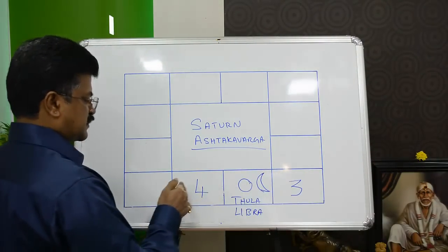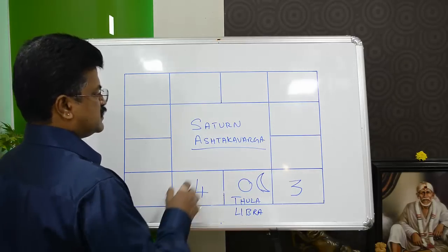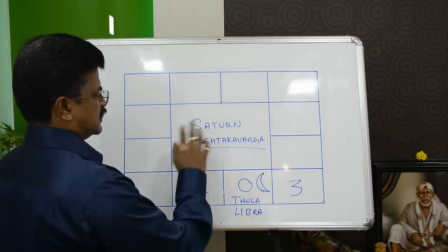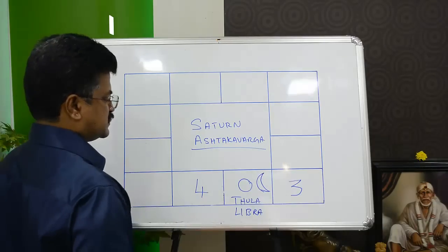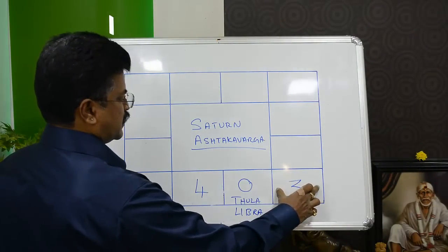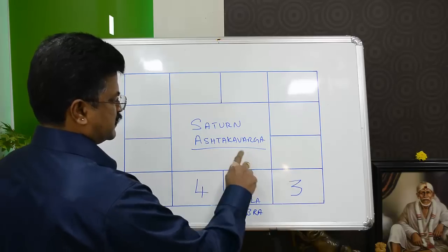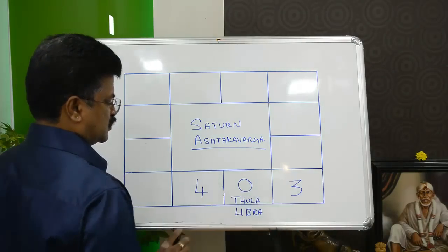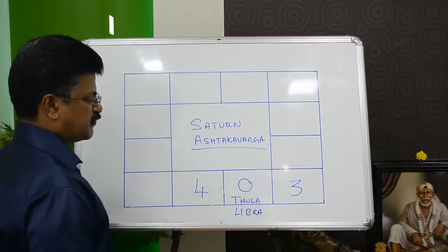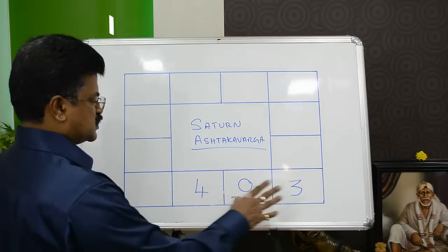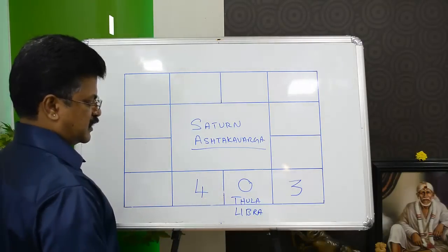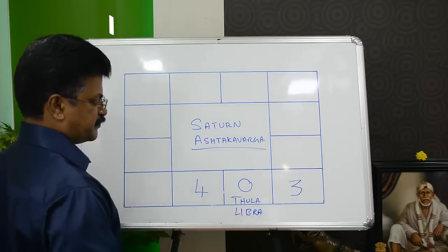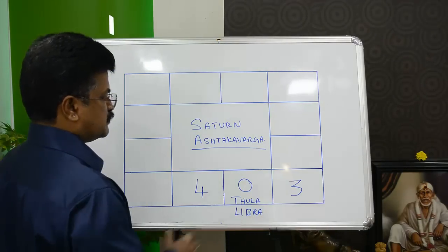Is it bad throughout these 7.5 years? To answer that question, you have to get this Saturn Ashtaka Varga and superimpose the numbers on these 3 signs. When Saturn comes to the first sign, it is associated with 3 points. When it comes to the second sign, it is 0, and when it comes to the third sign, it is 4 points. From this you will know that Saturn will be least harmful when it is over the sign with a score of 4. Anything greater than 3 is good enough; 3 is neutral, but 0 is really bad.